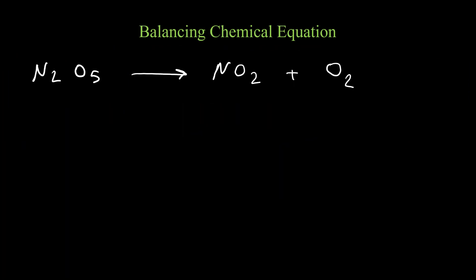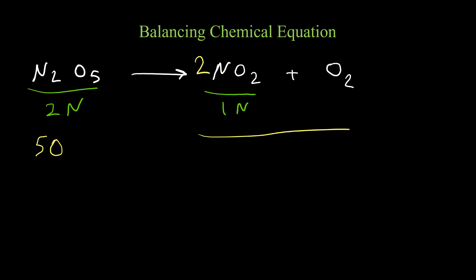Let's work on the decomposition of nitrogen pentoxide, which produces nitrogen dioxide and oxygen. I'll start by balancing nitrogen. On the left side we have two nitrogen and on the right side we have one nitrogen, so I put two in front of NO₂. Now nitrogen is balanced. On the left side we have five oxygen, and on the right side we have six oxygen — four from NO₂ and two from O₂ — so I can put one-half in front of O₂.